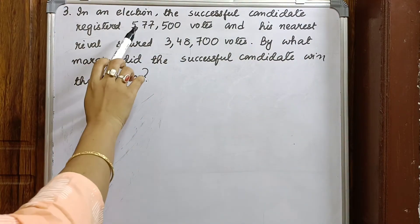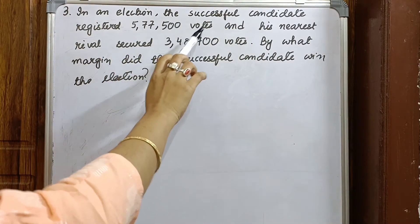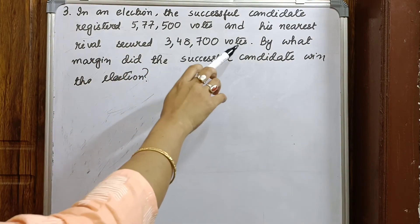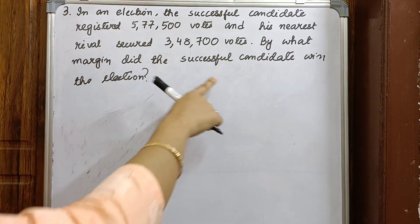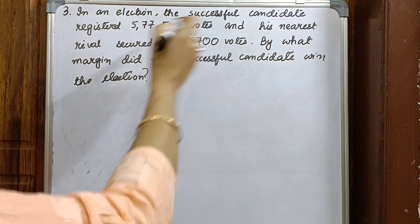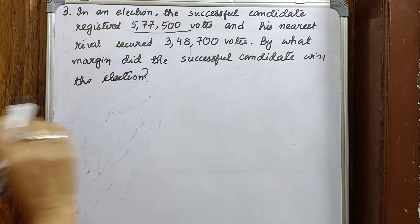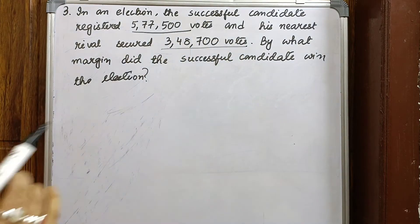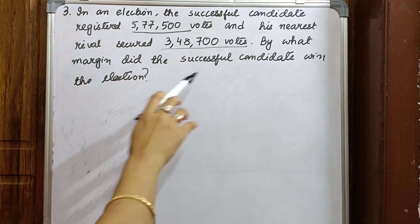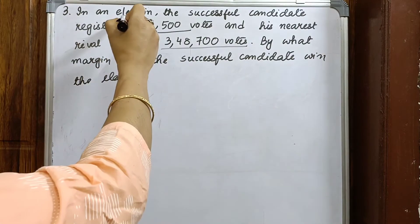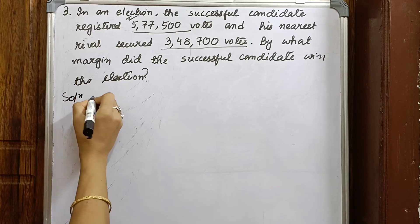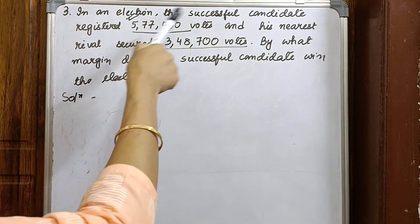Question three: in an election the successful candidate registered 5,77,500 votes and his nearest rival secured 3,48,700 votes. By what margin did the successful candidate win the election? That means the successful candidate won by how many votes.